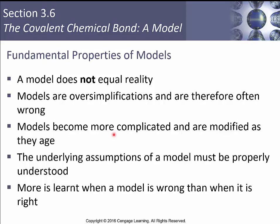Underlying assumptions of the model must be properly understood, and more is learned when the model is wrong sometimes than when it is right. For example, advances in quantum mechanics came when classical theory predicted an ultraviolet catastrophe — that at 5,000 degrees Kelvin you'd get an infinite number of ultraviolet photons out of a black body radiator. Then Planck came along and said our energy has to be quantized.